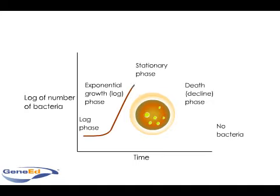As the bacterial population continues to grow, the nutrients are used up, and waste products from the bacteria build up in the environment. The loss of nutrients and buildup of waste products can cause the environmental pH or temperature to shift, which in turn makes the environment a less optimal growth area for the bacteria. The reproduction rate slows, and the total number of bacterial cells present stabilizes, as cells begin to die off or stop reproducing.